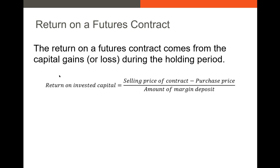How do we actually calculate the return on a futures contract? It's very straightforward — we use something akin to the basic return formula. We take the selling price of the contract, subtract the purchase price, and then divide by the amount of margin that we deposited.